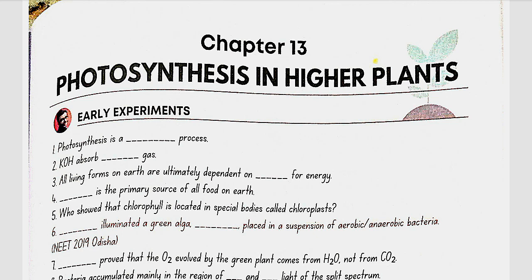Photosynthesis is the primary source of all the food on the Earth. Julius von Sachs showed that chlorophyll is located in special bodies called chloroplasts. T.W. Engelmann illuminated a green alga Cladophora placed in a suspension of aerobic bacteria.